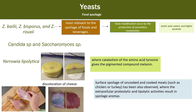Their heterogeneity means that they are responsible for the spoilage of a wide range of foods. Yarrowia lipolytica is associated with surface discoloration of cheese, where catabolism of the amino acid tyrosine gives the pigmented compound melanin. Surface spoilage of uncooked and cooked meat such as chicken or turkey has also been observed, where extracellular proteolytic and lipolytic activities result in spoilage aroma.